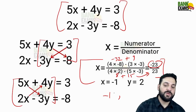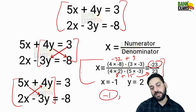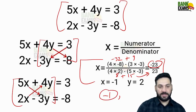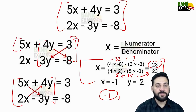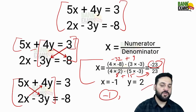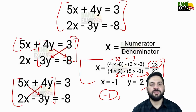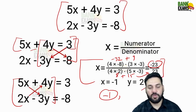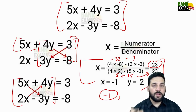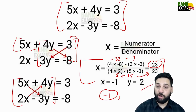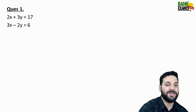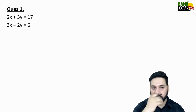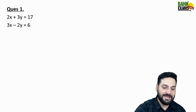To find the value of y, simply substitute x = -1 into any of the equations. You can easily find y, which equals 2. This is a very simple method — I'll do 4 more questions so you can practice it yourself. With practice, you can solve these very easily. Let's solve the first practice question.